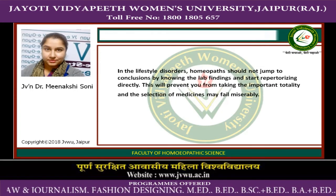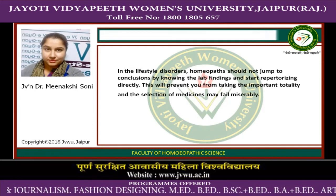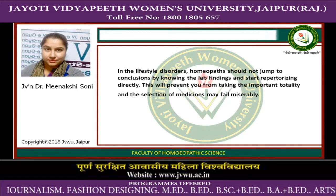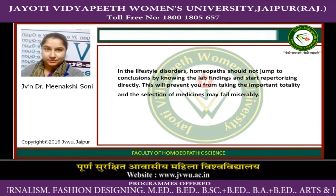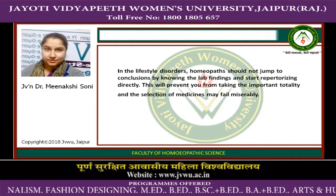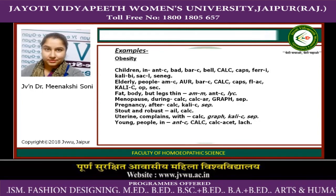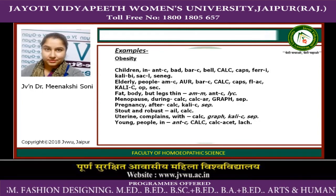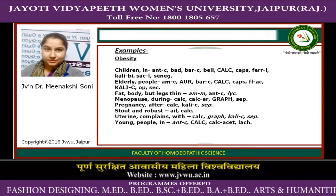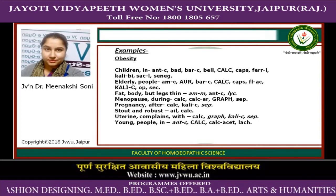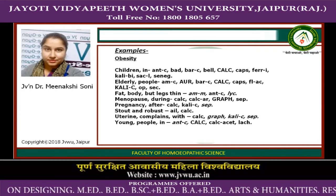In lifestyle disorders, a homeopath should not jump to conclusions by knowing the lab finding itself and start repertorizing directly. This will prevent you from taking the important totality and the selection of medicines may fail. For example, if we take a case of obesity — whether in a child, elder person, menopausal woman, pregnant woman, or young person — we can select rubrics in the clinical chapter.